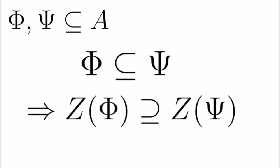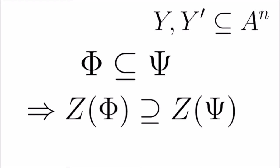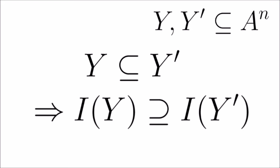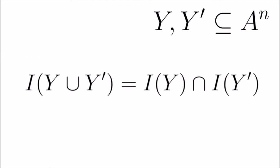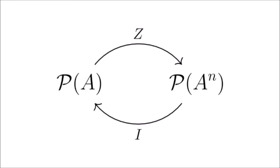First, suppose we have two subsets of polynomials: if one contains the other, inclusion is reversed when looking at their zero sets. Next, for two subsets of affine space, if one is a subset of the other, inclusion is similarly flipped when looking at their ideals. Finally, the ideal of the union of subsets is the intersection of the ideals of the subsets. With these results, we're ready to start looking at deeper relationships between the spaces, starting with what happens when we compose Z and I with each other.